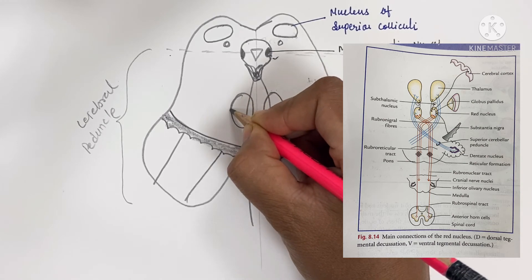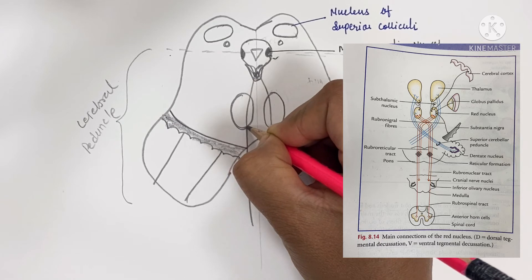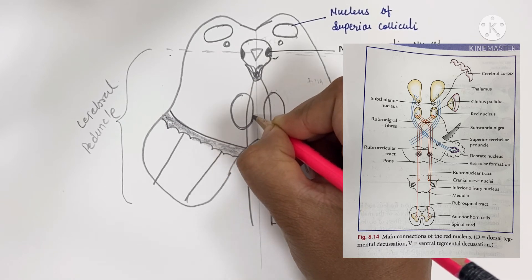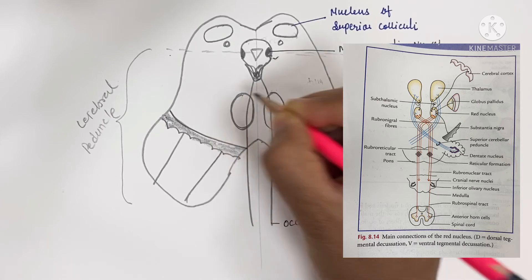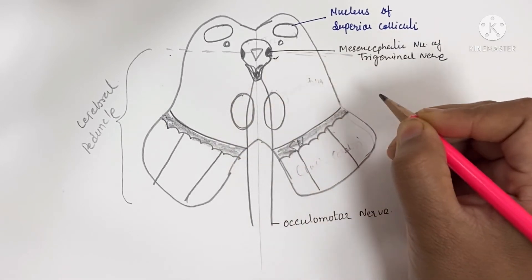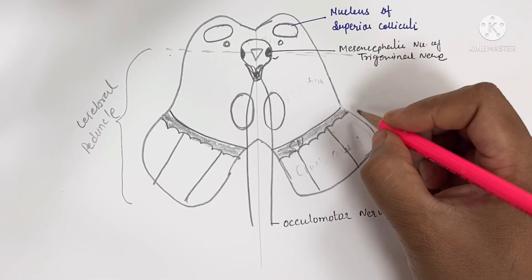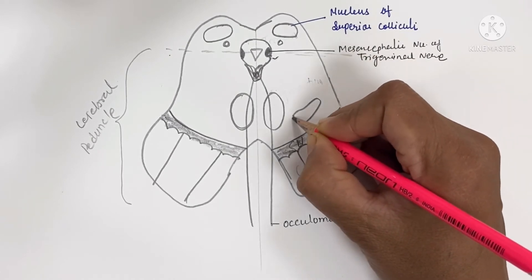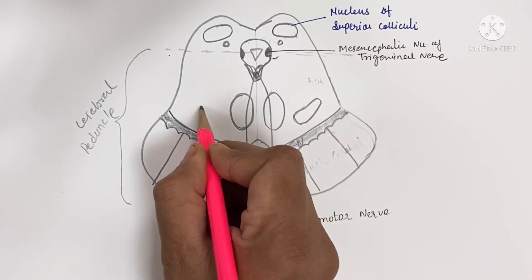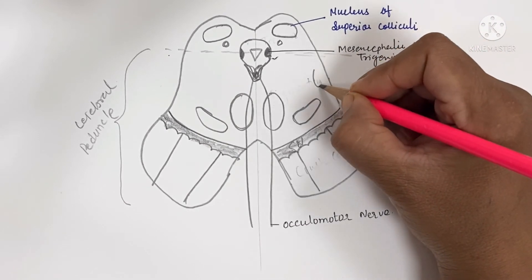Afferent fibers arise from the cerebellum, globus pallidus, hypothalamus, subthalamic nucleus, substantia nigra, and tectum. Efferent fibers go through the rubrospinal, rubrobulbar, and rubroreticular tracts. These fibers decussate at the ventral tegmental decussation of Forel. Fibers also go through rubro-olivary, rubrothalamic, rubrocerebellar, and rubronigral pathways.